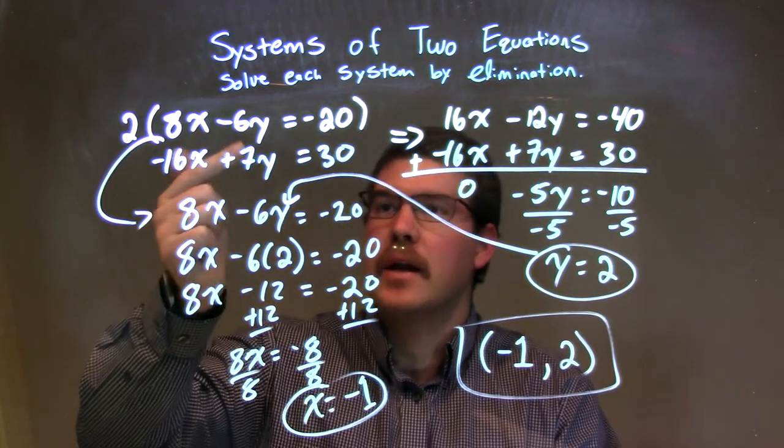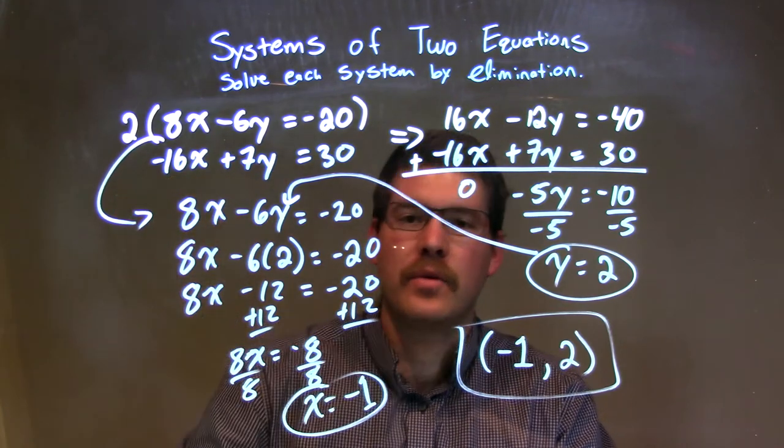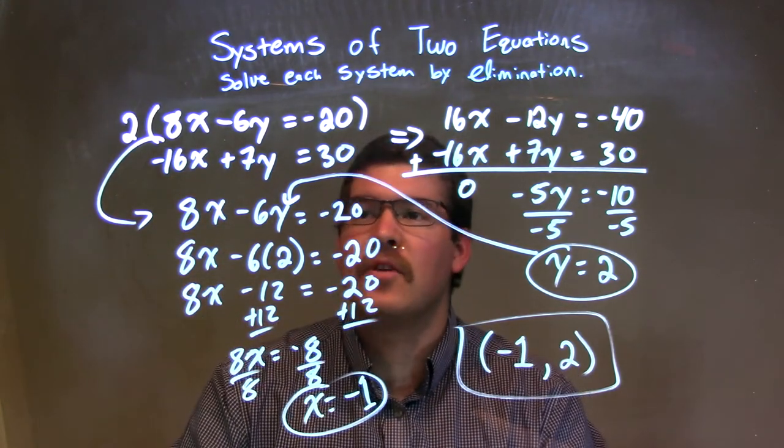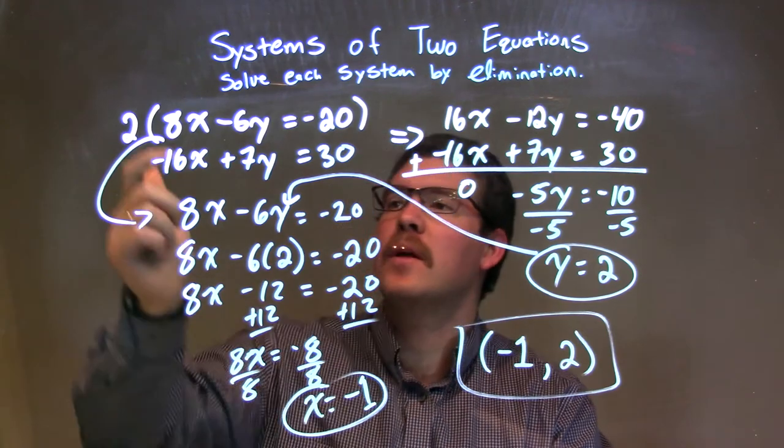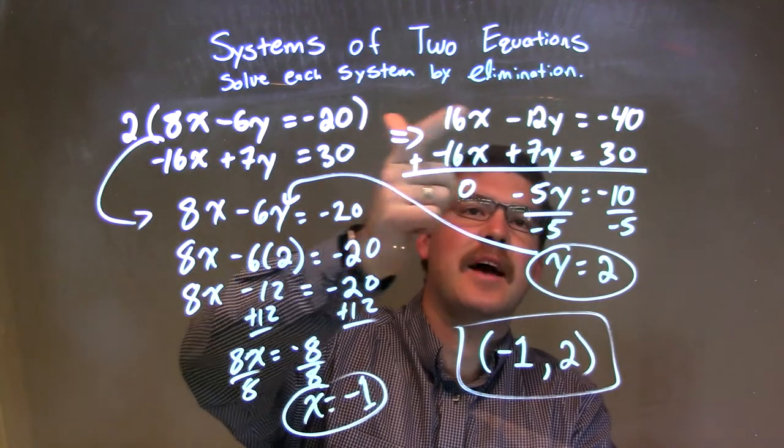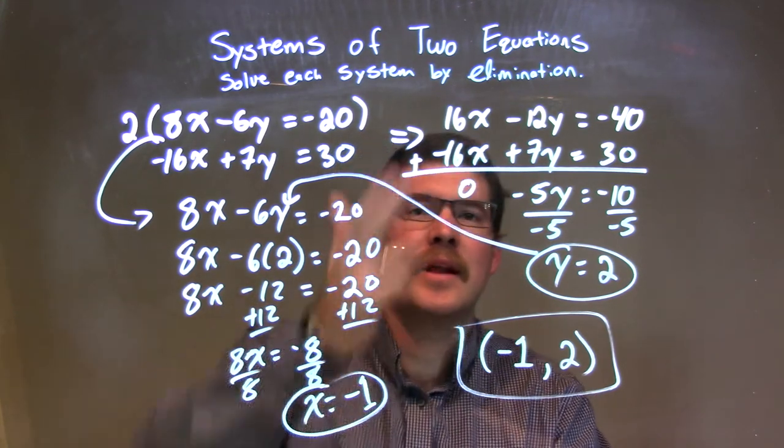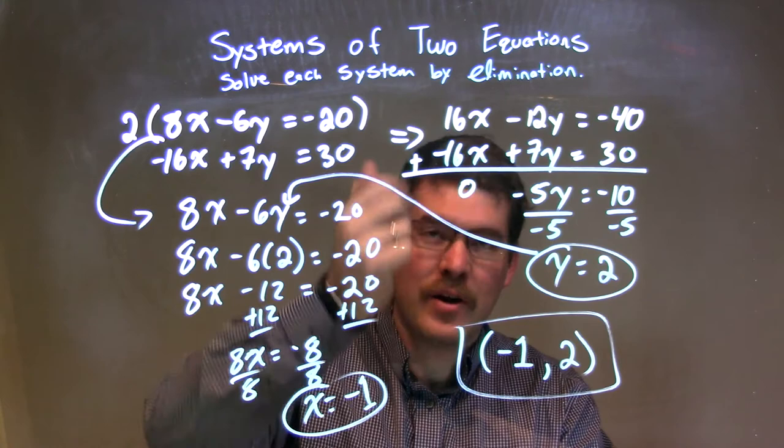We're given our two equations. 8x minus 6y equals negative 20. And negative 16x plus 7y equals 30. And what I want to do is solve this by elimination. Well, I multiplied the top equation by 2 of the whole thing, which gave me 16x minus 12y equals a negative 40. What that allowed me to do is eliminate the x variable when I add them.